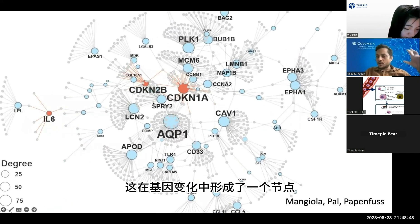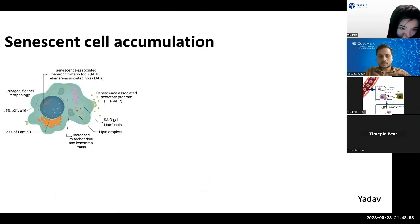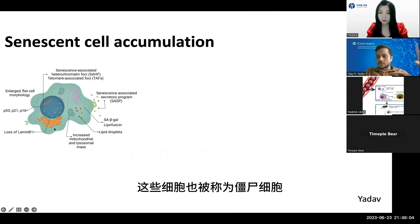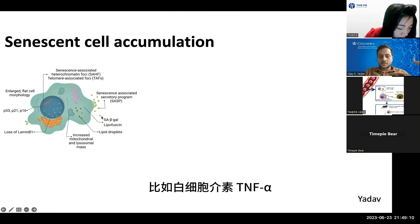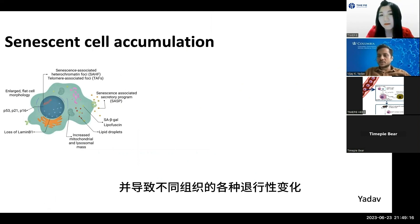This senescence enrichment was forming a central node in the transcriptomic changes in taurine-deficient cells. Senescent cells, also known as zombie cells, accumulate in the body with age. They produce a lot of inflammatory cytokines such as interleukins and TNF-alpha, leading to a variety of degenerative changes in different tissues.